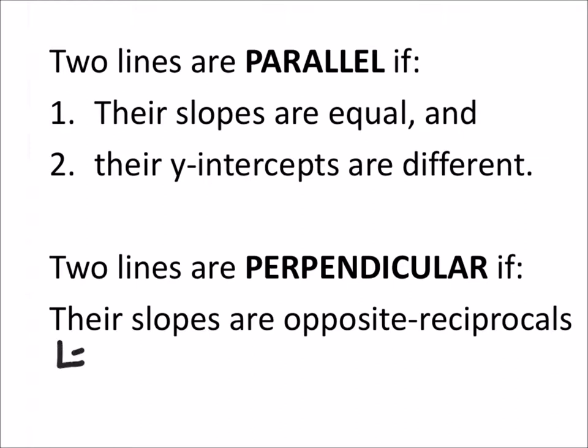For example, if we had a slope of, I don't know, negative four-sevenths. Well, what's the opposite of a negative? It would be positive. And then how would we reciprocate four-sevenths? We'd just have seven-fourths.